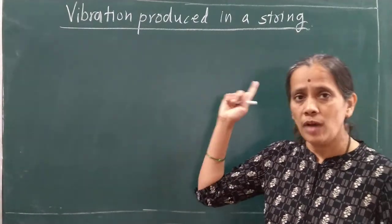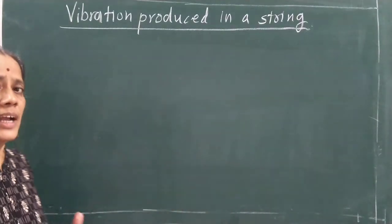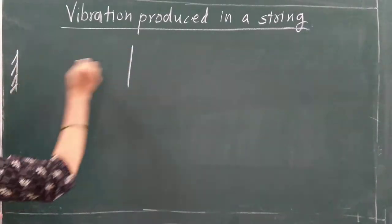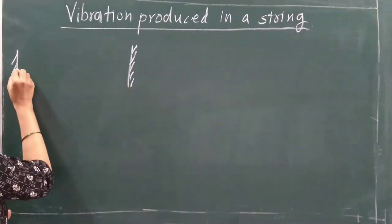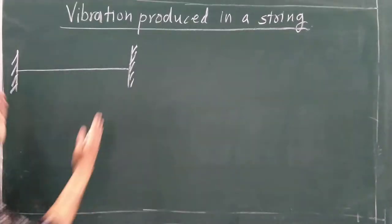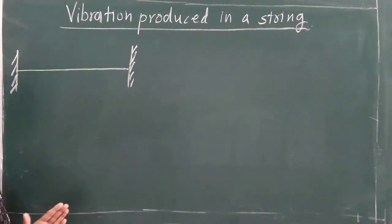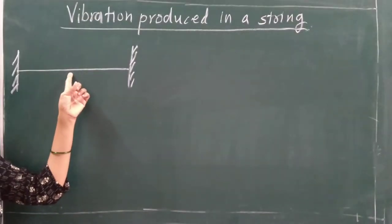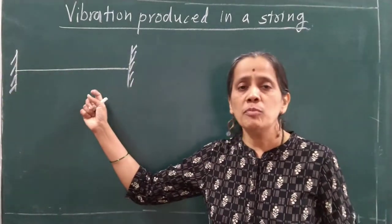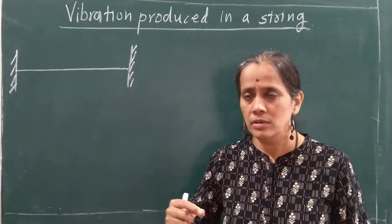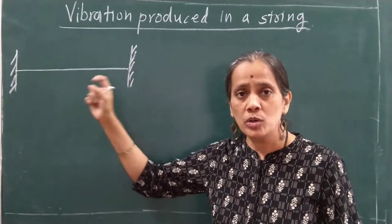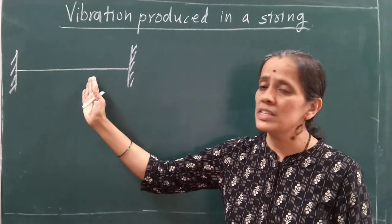Now here in vibration produced in the string — we are going to consider a string stretched between two rigid supports. When the string gets stretched between the rigid supports, those supports provide tension. And if this string is made to vibrate by some external means — like bringing a vibrating tuning fork near the string — then due to forced vibration, this string will start vibrating.